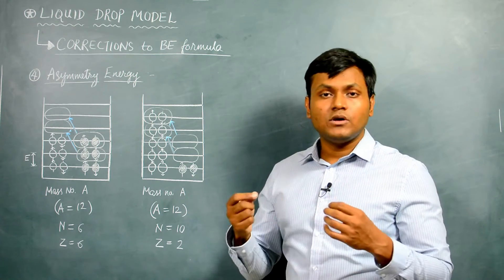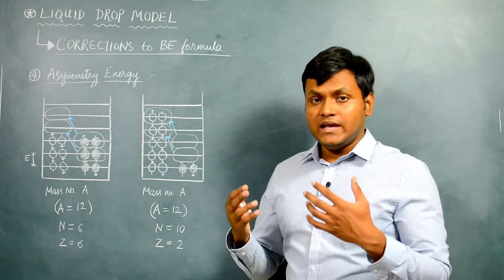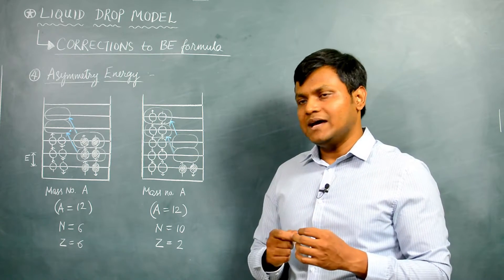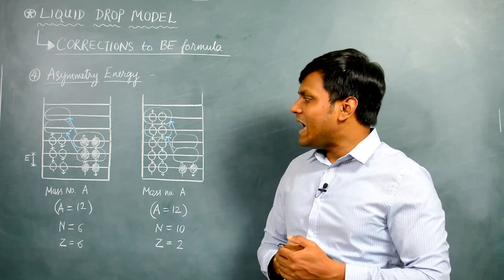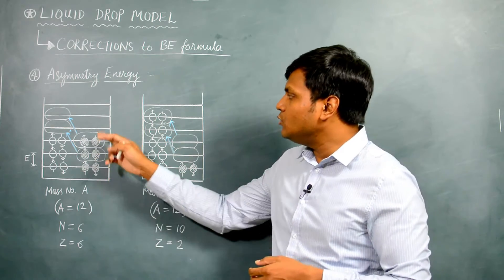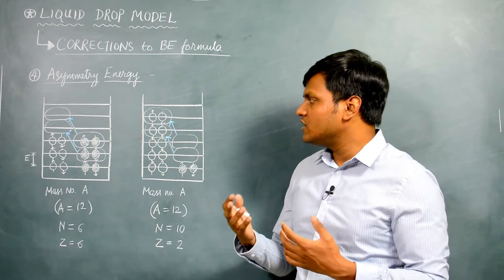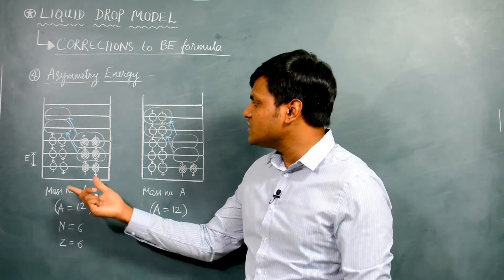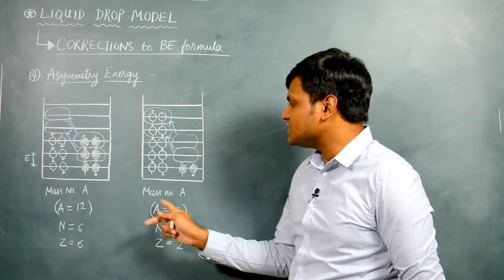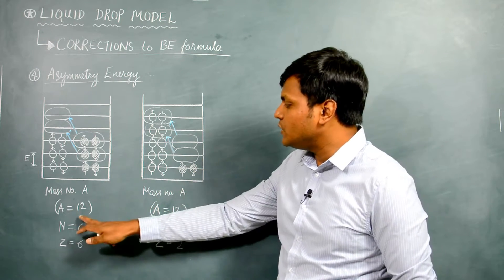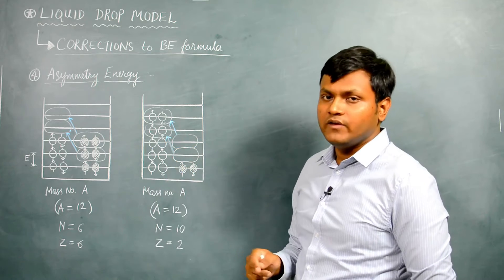Inside an atom, you have electrons which arrange themselves in certain energy levels. Similarly, in the nucleus, the neutrons and protons also arrange themselves in energy levels. The nuclear energy levels for neutrons and protons are approximately similar. If we assume that the energy level spacing for all the different energy levels is some approximate value E, we can derive an expression for the difference in energy between two configurations. Both configurations could be for a nucleus having the same mass number — in this case, mass number 12.